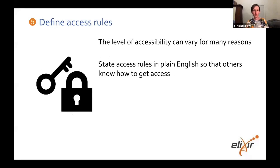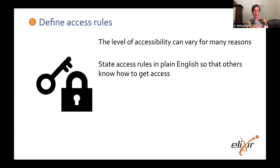Number five is to define the access rules. The level of accessibility of different materials can vary for many different reasons — it may be that your materials are only accessible to people who've paid for a course, and that's completely fine. As Philippe was saying, the level of accessibility can vary; you just have to be very clear about how it varies and what the rules for access are. What we recommend is to write this in the metadata or even include it in a readme file that goes alongside your training materials, so people can clearly see whether or not they can access the materials and how.